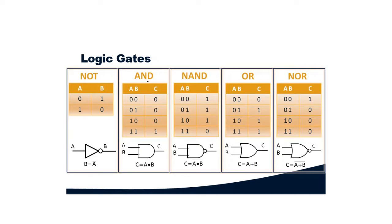Then we have the AND gate. The definition of the AND gate is that the output is going to be one whenever all the inputs are one — that is, the output is going to be high whenever all the inputs are high. If any of the inputs is zero, the output is going to be zero. The output is one if and only if all the inputs are one.